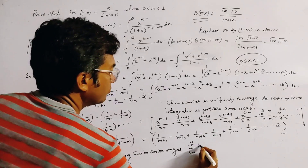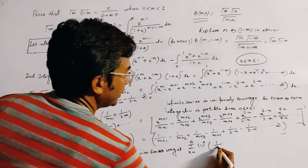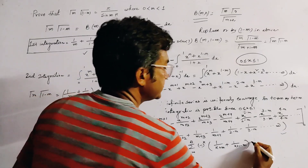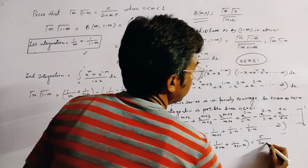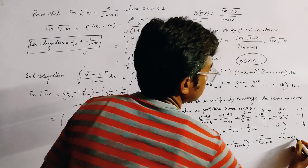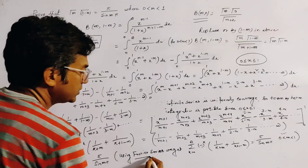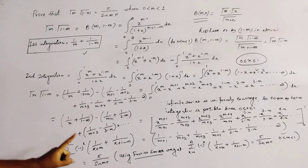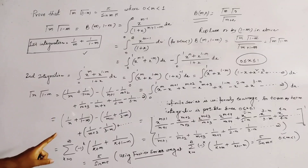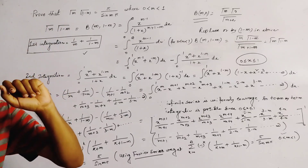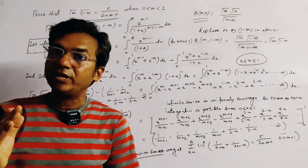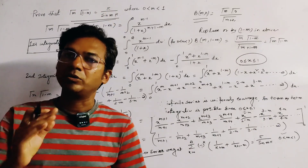This summation Σ_{k=0}^∞ (-1)^k · [1/(k+m) + 1/(k+1-m)] is equal to π/sin(mπ), for 0 < m < 1, a result obtained from a known series expansion. Therefore, Γ(m)·Γ(1-m) = π/sin(mπ), which is the required result. This is a very important result of the gamma function. Thank you for watching.